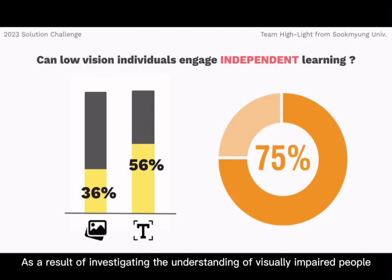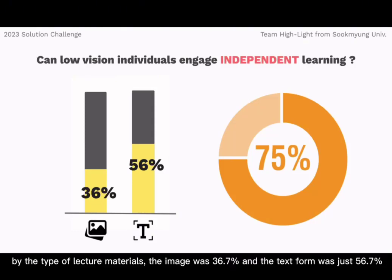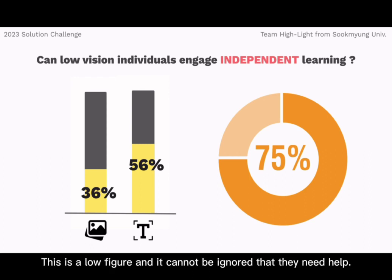As a result of investigating the understanding of visually impaired people by type of lecture materials, the image was 36.7% and the text form was just 56.7%. This is a low figure, and it cannot be ignored that they need help.